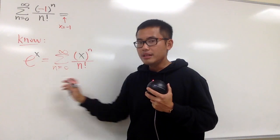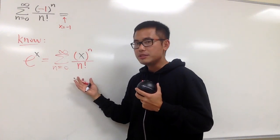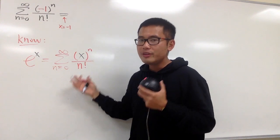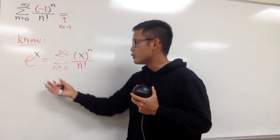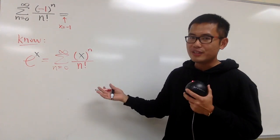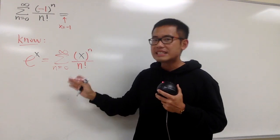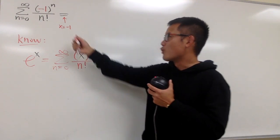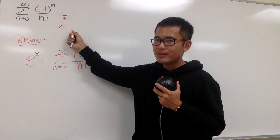And by the way, e to the x is the power series. This is good for all the x values, because the radius of convergence is infinity. So I can plug in any x values that I want, and it will still be legitimate. Of course, then I can plug in negative 1, all right?